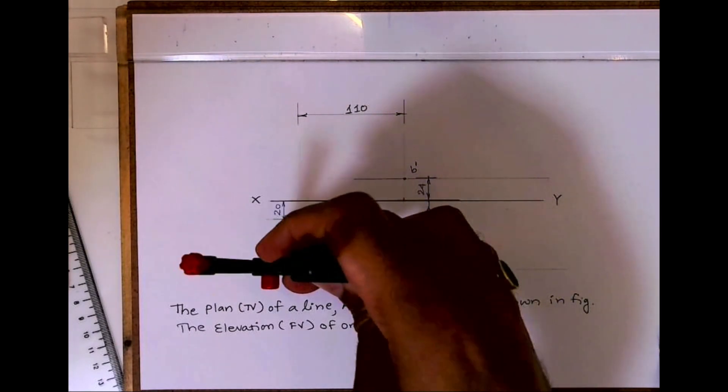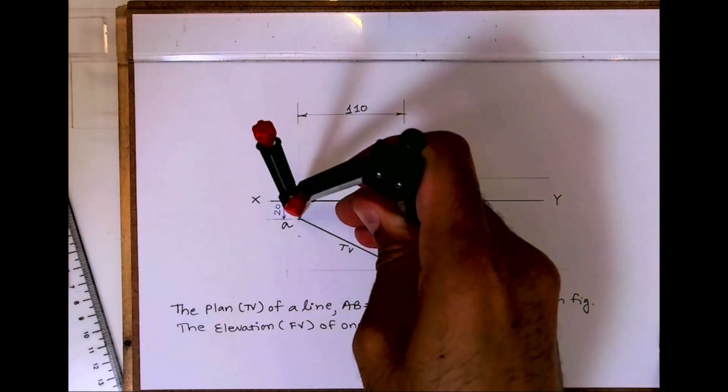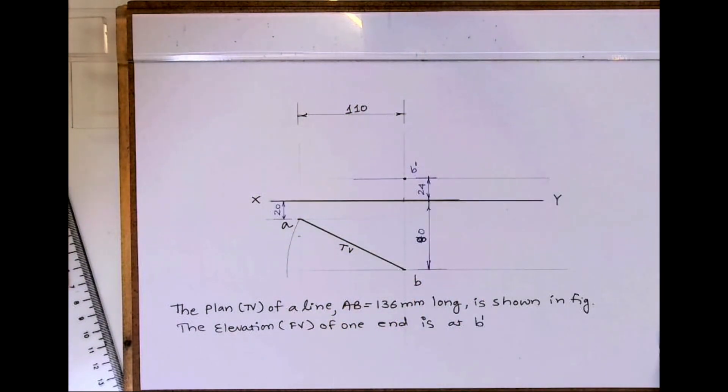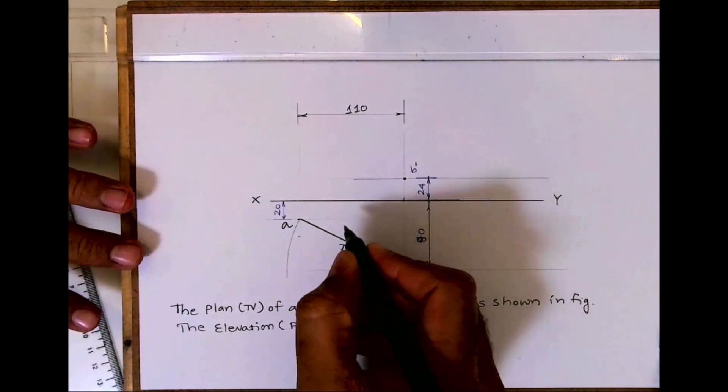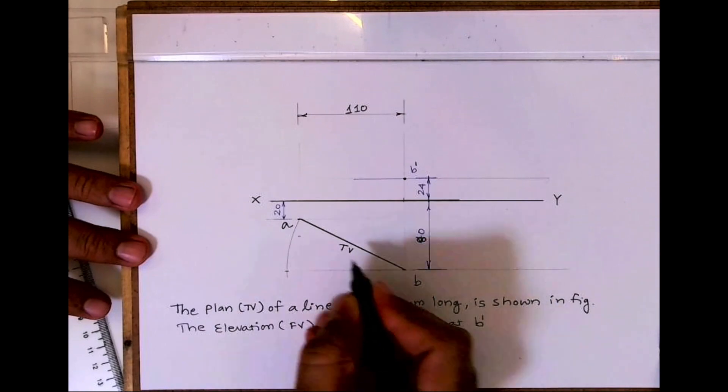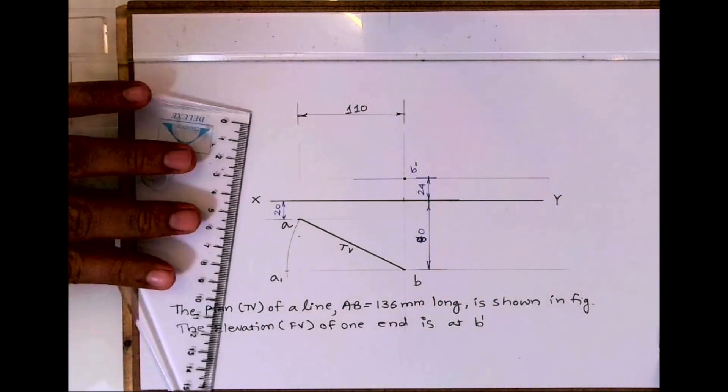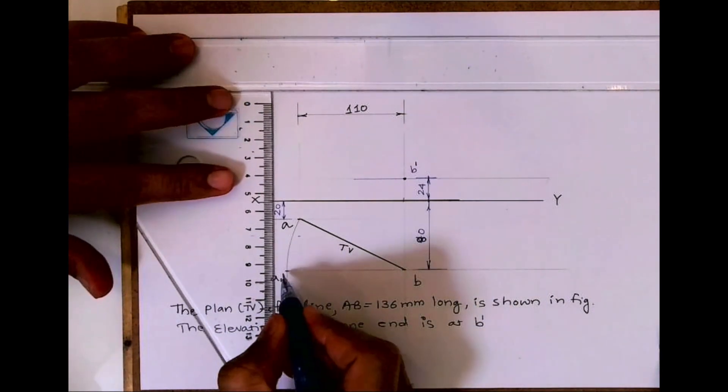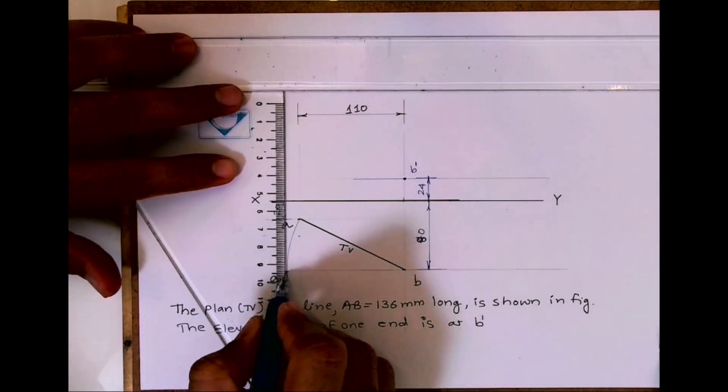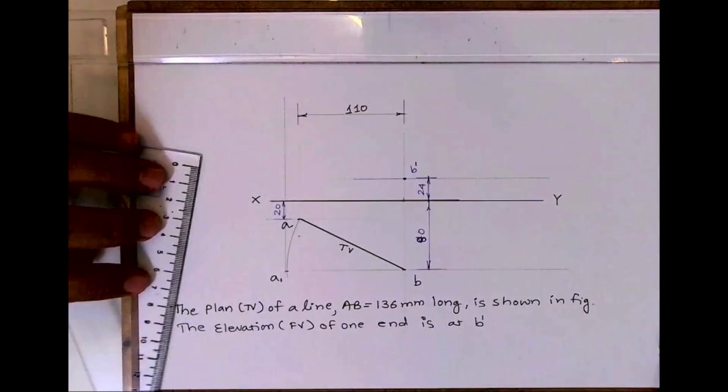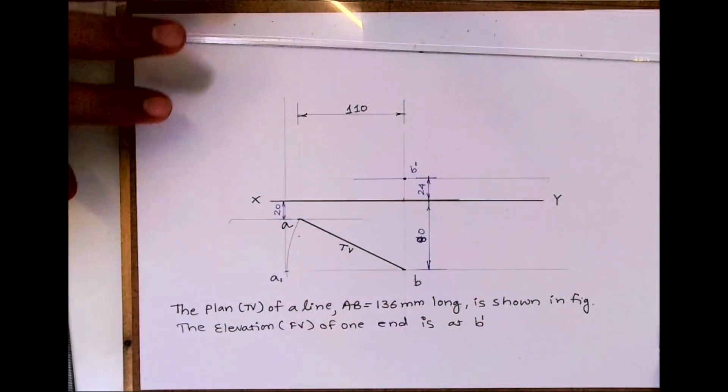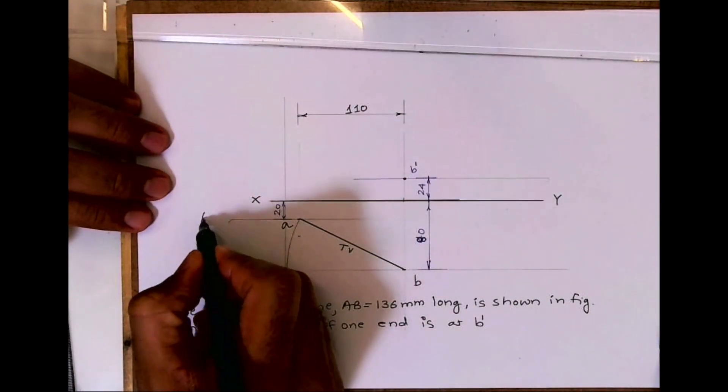Then we'll rotate this top view. See, I'm keeping point B fixed. In all my previous problems I used to keep A fixed, but now in this problem I'm keeping point B fixed. So this is A1, first step. Then I will take A1 up. Here I'm drawing the locus of A.